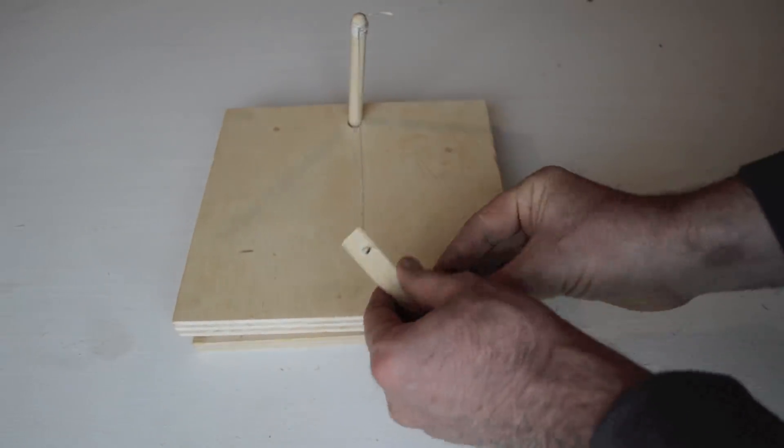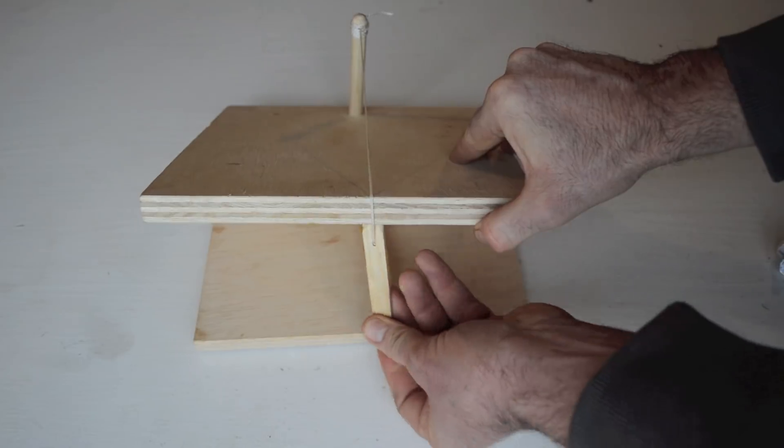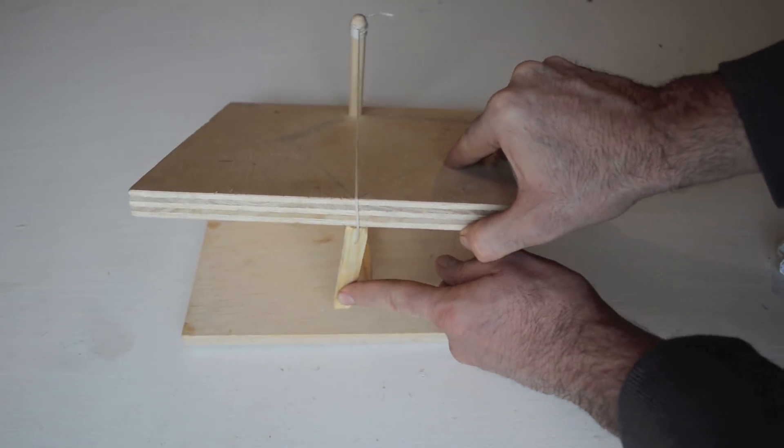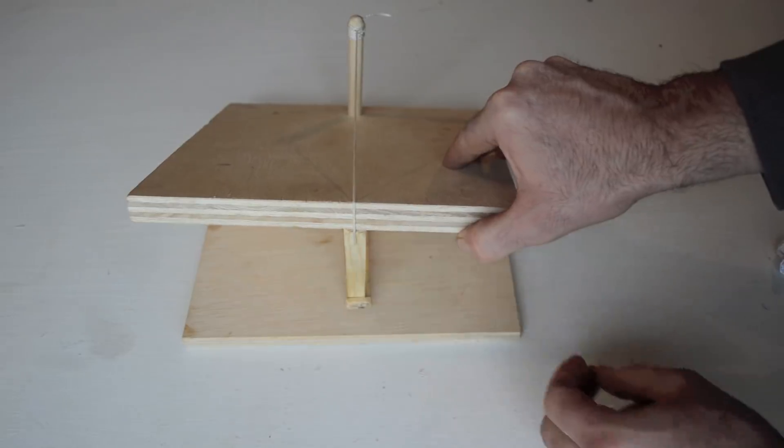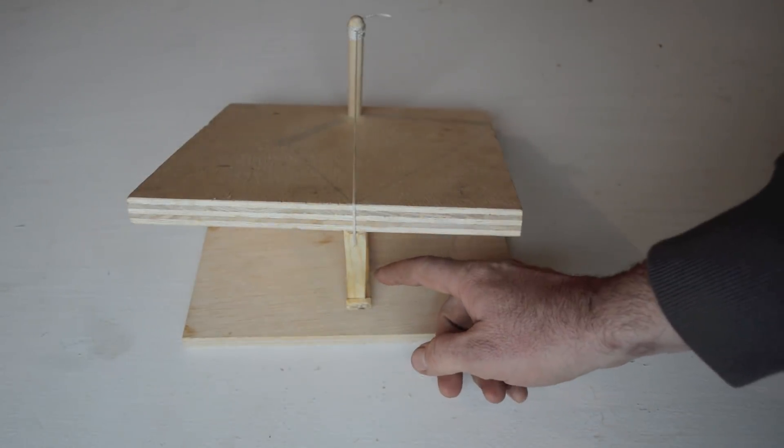You just pull this toggle forward, wrap it around, and the mechanics of it is it wants to push forward. So you have a little notch in the bottom of the trigger, put it like that, holds it in place. It's pretty sensitive.